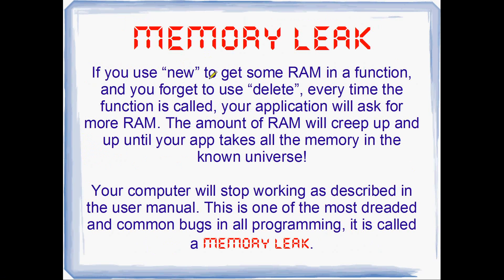Memory leaks. If you use the new operator to get some RAM from the heap in a function somewhere, and you forget to use delete to return the RAM back to the heap, then every single time your function is called, your application is going to ask for more and more RAM, and it's going to creep up and up and up. If you open up Task Manager with Ctrl-Alt-Delete, you can see the amount of RAM your program is using creeping up and up, never going back down, because you're not deallocating the RAM. This is called a memory leak. Your computer will eventually use up all its memory and crash. Always delete stuff you've gotten from the heap — it's not deleted automatically. You don't want memory leaks. They're very bad.